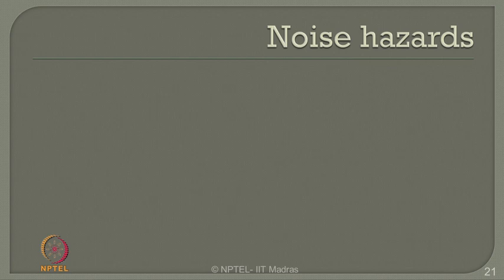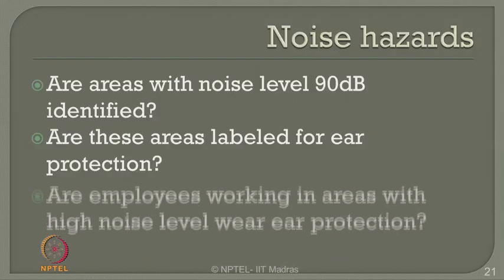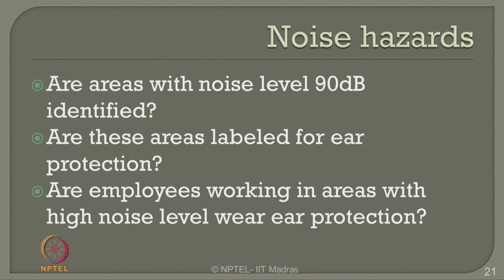Noise is one important area where people cannot communicate when noise hazards are unacceptably high. Are areas with noise levels above 90 decibels identified? Do people wear personal protection devices in those areas? Are these areas labeled for ear protection? Are employees in high noise areas wearing ear protection devices? You must ensure this by periodic inspection and surveys, reporting to the plant executive. In most cases it has been observed that when people do not wear ear protection where noise is very high, communication becomes inadequate, resulting in disasters and serious accidents.